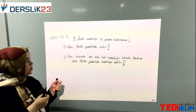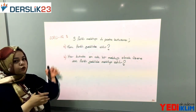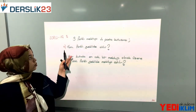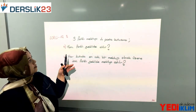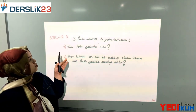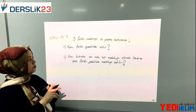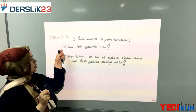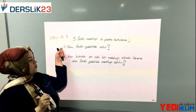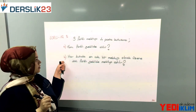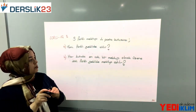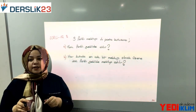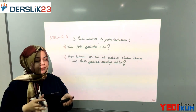Başlayalım arkadaşlar. 14. sorumuzda kalmıştık. 14. soru bize diyor ki 3 farklı mektup, 4 posta kutusu varmış. 2 tane maddemiz var. A: kaç farklı şekilde atılır? B: her kutuda en çok bir mektup olmak üzere kaç farklı şekilde mektup atılır?